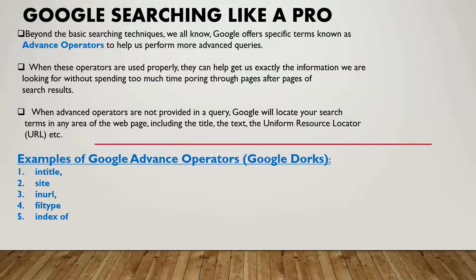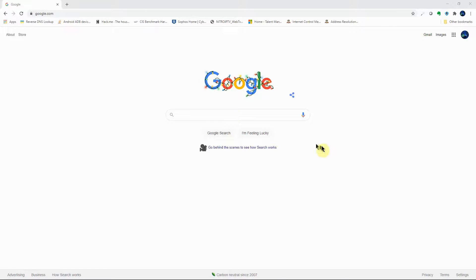That makes it hard to narrow down exactly what we're looking for. Some examples of Google advanced operators we'll be looking at today are: intitle, site, inurl, filetype, and index of. Let's get into it.